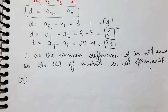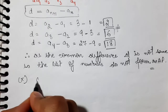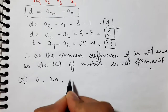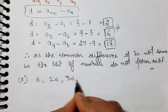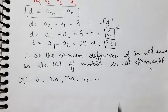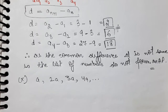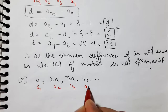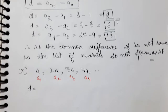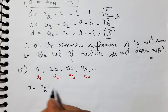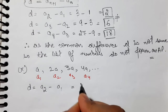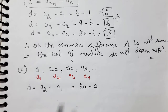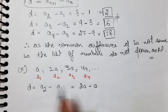Now we will do our tenth part. What is our tenth part? It is A, 2A, 3A, 4A, and so on. First of all, we will mark the first term, second term, third term, and fourth term. Now we will find the common difference.